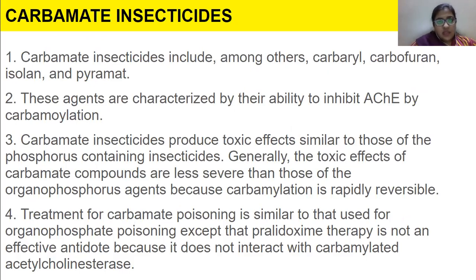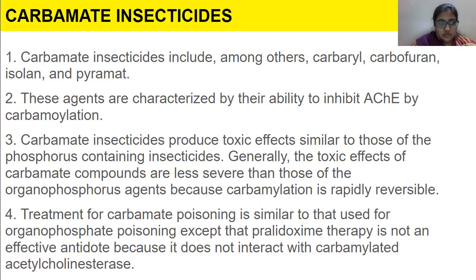Next are carbamate insecticides, which include carbaryl, carbofuran, isolan, and pyrimateate. These agents are characterized by their ability to inhibit AChE by carbamylation, which affects the protein and disrupts it. Carbamate insecticides produce toxic effects similar to those of organophosphorus insecticides; however, the toxic effects are generally less severe because carbamylation is rapidly reversible. Treatment of carbamate poisoning is similar to that for organophosphate poisoning, except that pralidoxime therapy is not an effective antidote because it does not interact with carbamylated acetylcholinesterase.